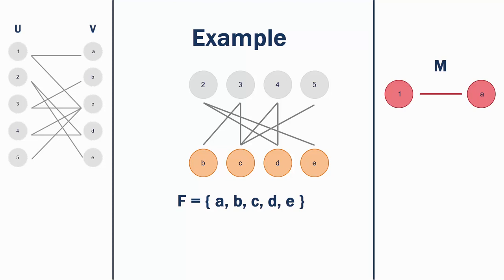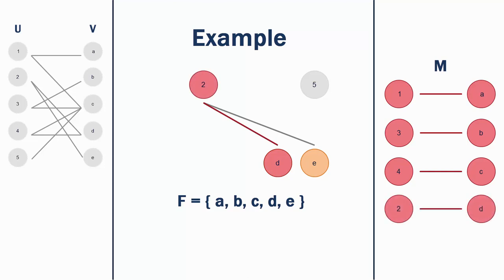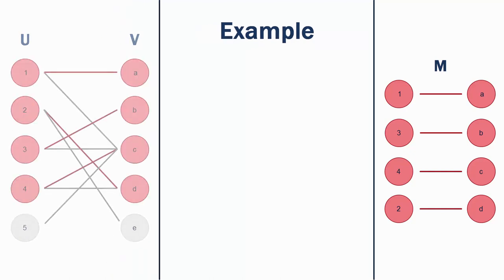We repeat this for every vertex in F. Notice that vertices orphaned during the process above will not become part of the matching during this iteration. For example, V5 is orphaned when V4 is added to the matching. It will require another iteration of the algorithm before V5 becomes part of the matching. We have now finished the first iteration of the Hopcroft-Carp algorithm, and here is our graph with the new matchings. We repeat this process until we are unable to increase the number of matchings. The graph will then have a maximum number of matchings.